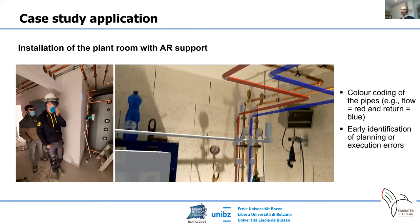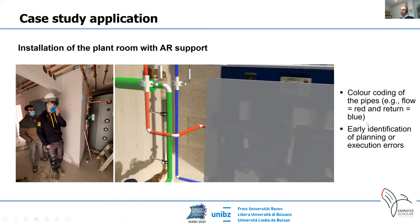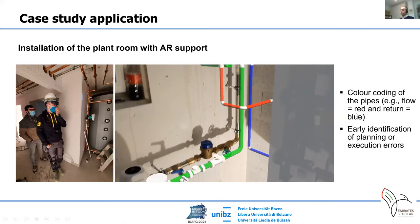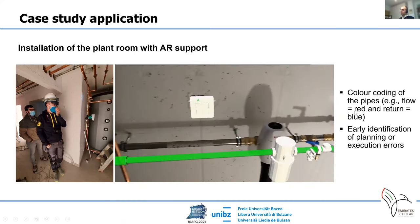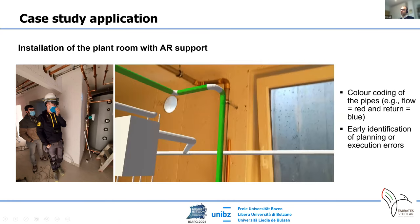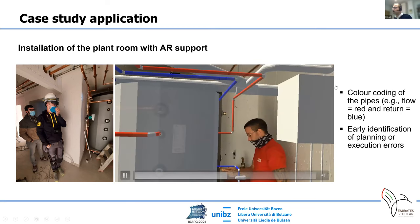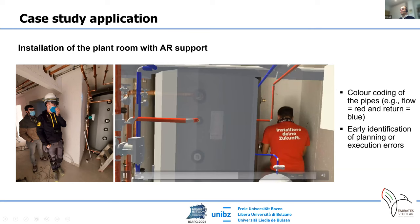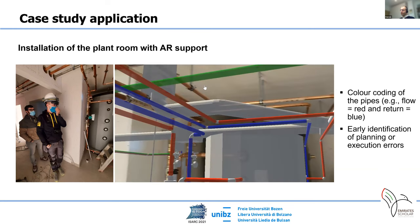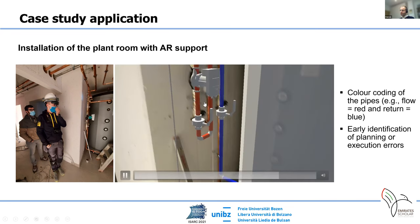Here we see another supported installation of the plant room with augmented reality support. We have also video, and here we see the color coding of the pipes: flow equals red color and return equals blue color. This was used for early identification of planning or execution errors. As you see here, the hole in the wall was not placed correctly, and so we could avoid re-fabricating the pipes on site.